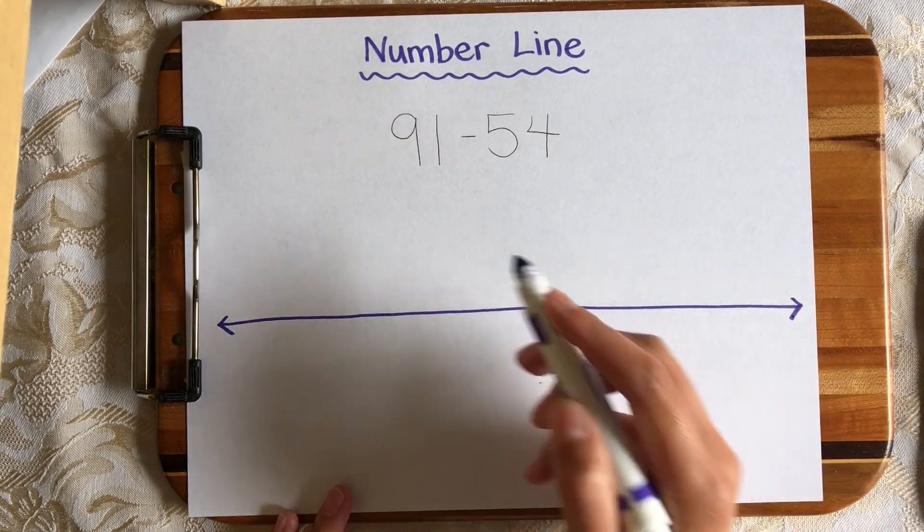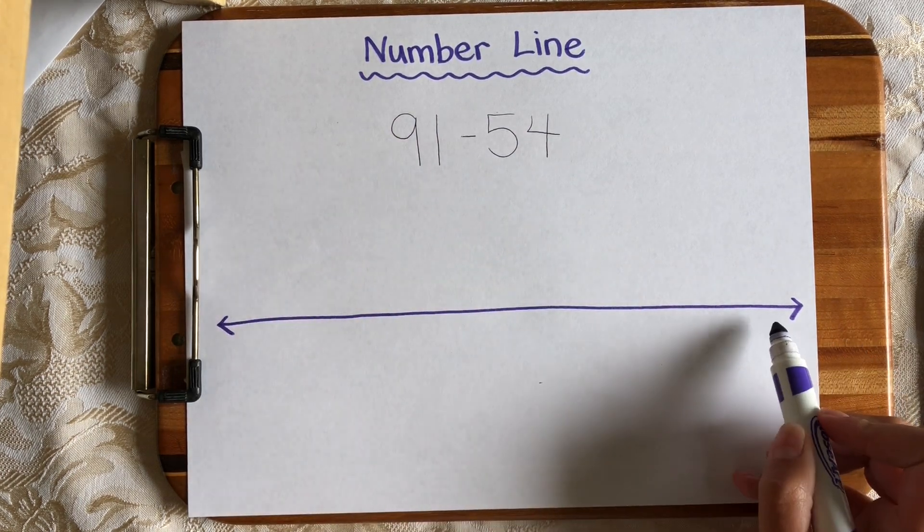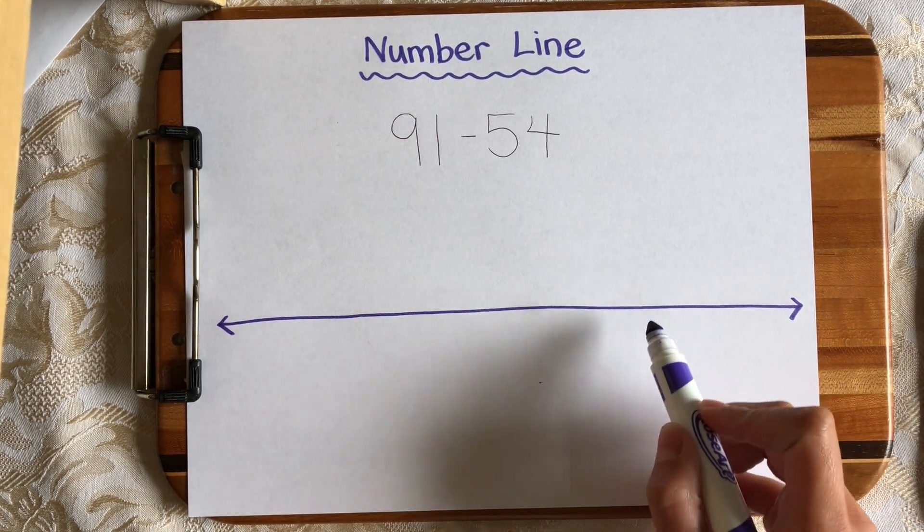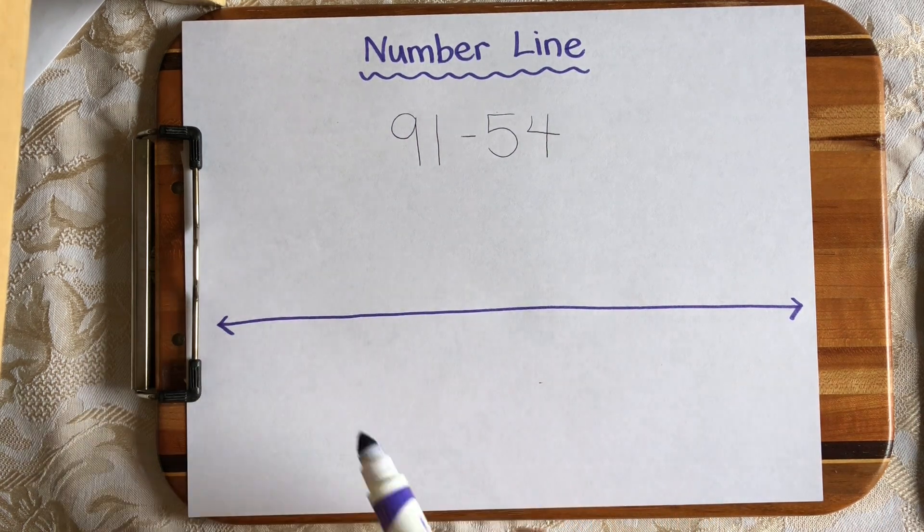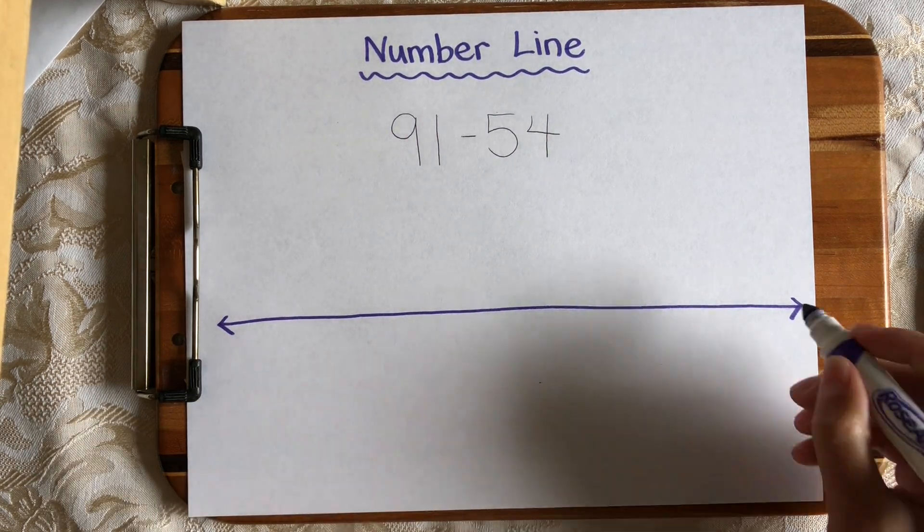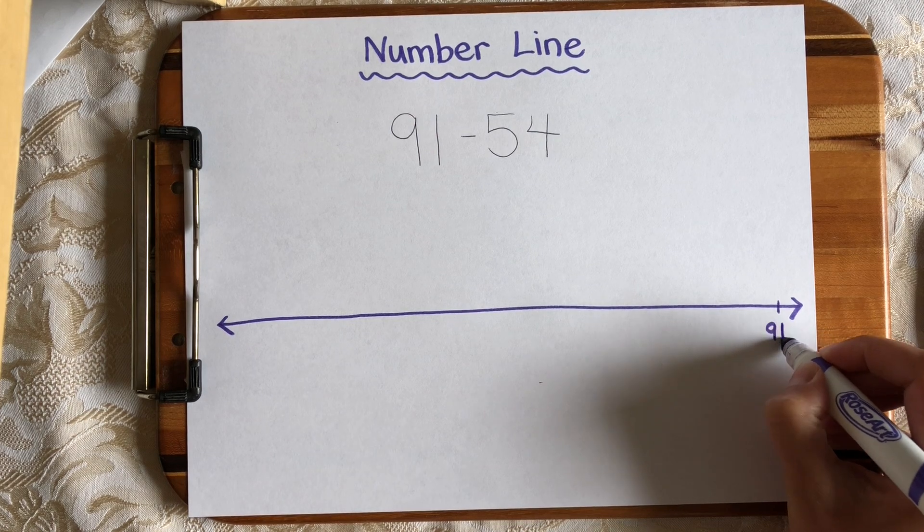And we're going to place our first number, the biggest number here, on the right side of the number line, so that we have plenty of room to subtract and move to the left. So let's place 91 on the right side over here.